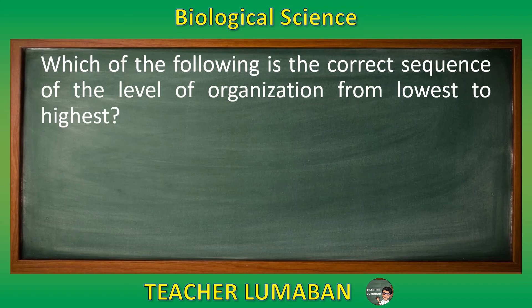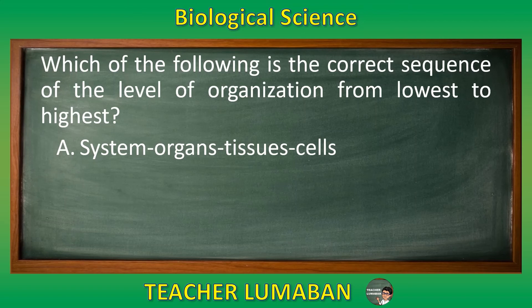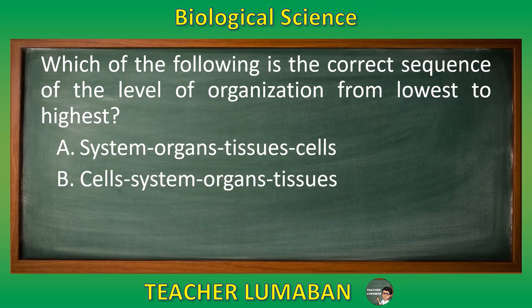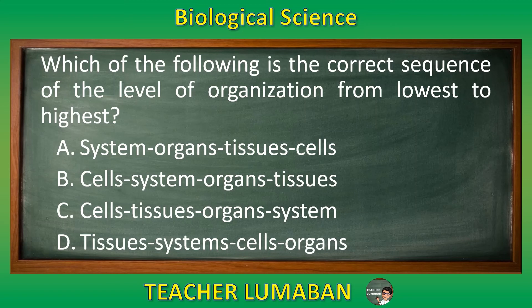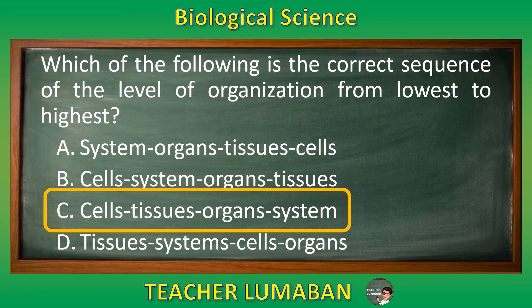Which of the following is the correct sequence of the level of organization from lowest to highest? Letter A: system, organs, tissues, cells. Letter B: cells, system, organs, tissues. Letter C: cells, tissues, organs, system. Letter D: tissues, system, cells, organs. Choose the suitable answer based on the given choices in 5 seconds. 5, 4, 3, 2, 1. The correct answer is Letter C, cells, tissues, organs, system. This is the correct sequence of the level of organization from lowest to highest.